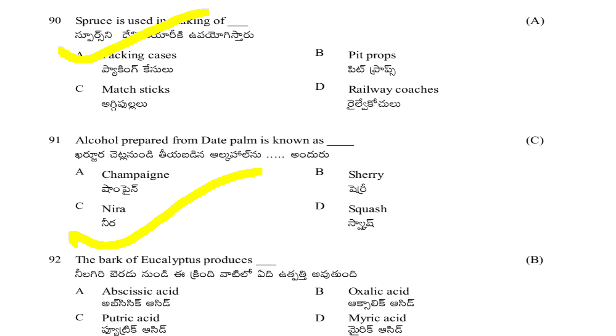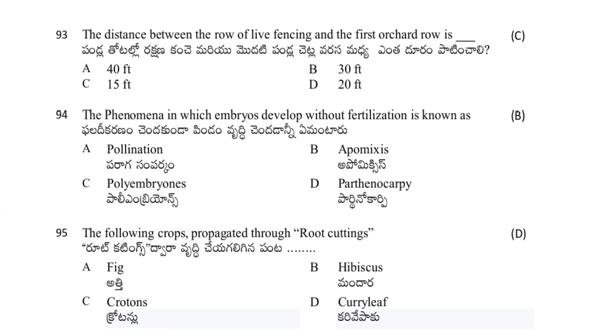The bark of eucalyptus produces: abscisic acid, oxalic acid, putric acid, or myric acid. The answer is oxalic acid.